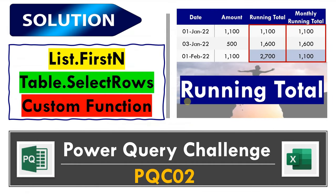I was ready with one solution for this challenge using table.selectRows. However, I received a good amount of creative solutions from you — thank you very much to each and everyone who shared their solution with me. Some of these solutions were depending on list.firstN, which is a very famous solution, and some used a custom function.